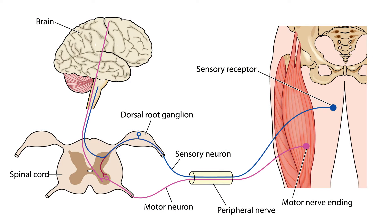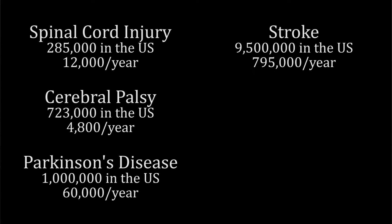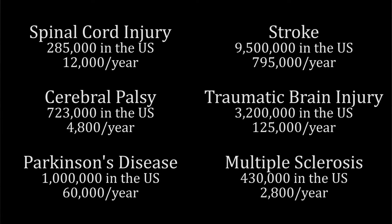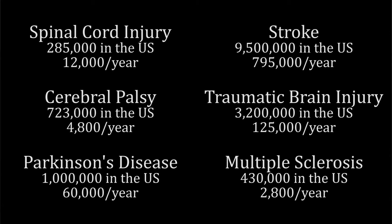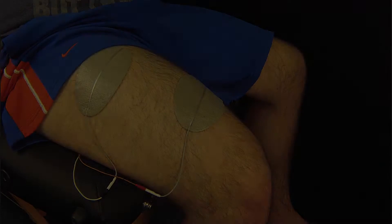Motor neurons are nerves that carry signals from the spinal cord to muscles to produce movement. When muscles are unable to receive these signals, or signals are corrupted, as is the case with disease or injuries such as spinal cord injuries, cerebral palsy, Parkinson's disease, and stroke, to name a few, a person's ability to move his or her limbs is affected.